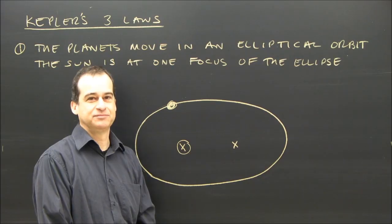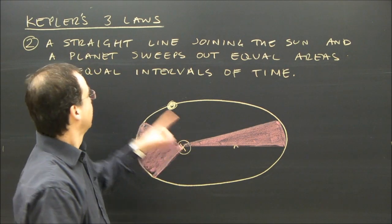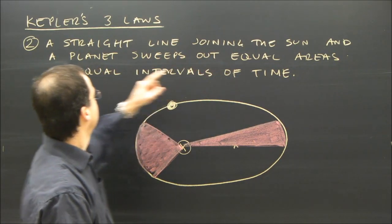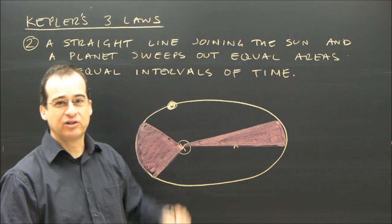Let's look at the second law. Kepler's second law is an observation. He noticed that a straight line joining the sun and a planet sweeps out equal areas in equal intervals of time.